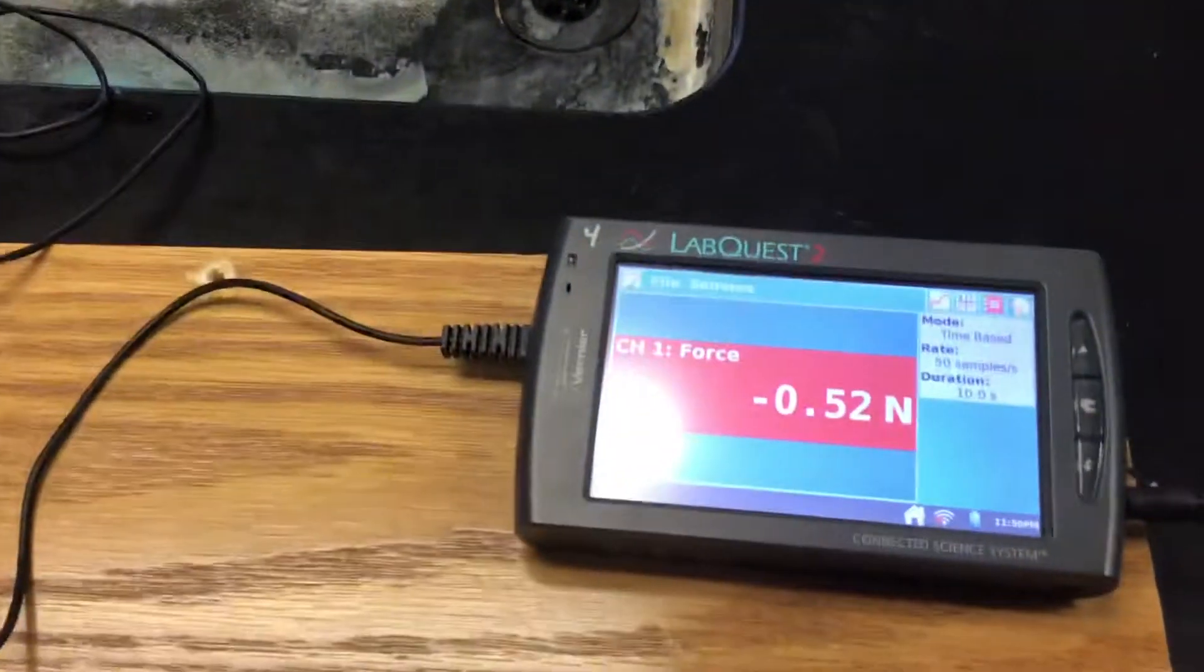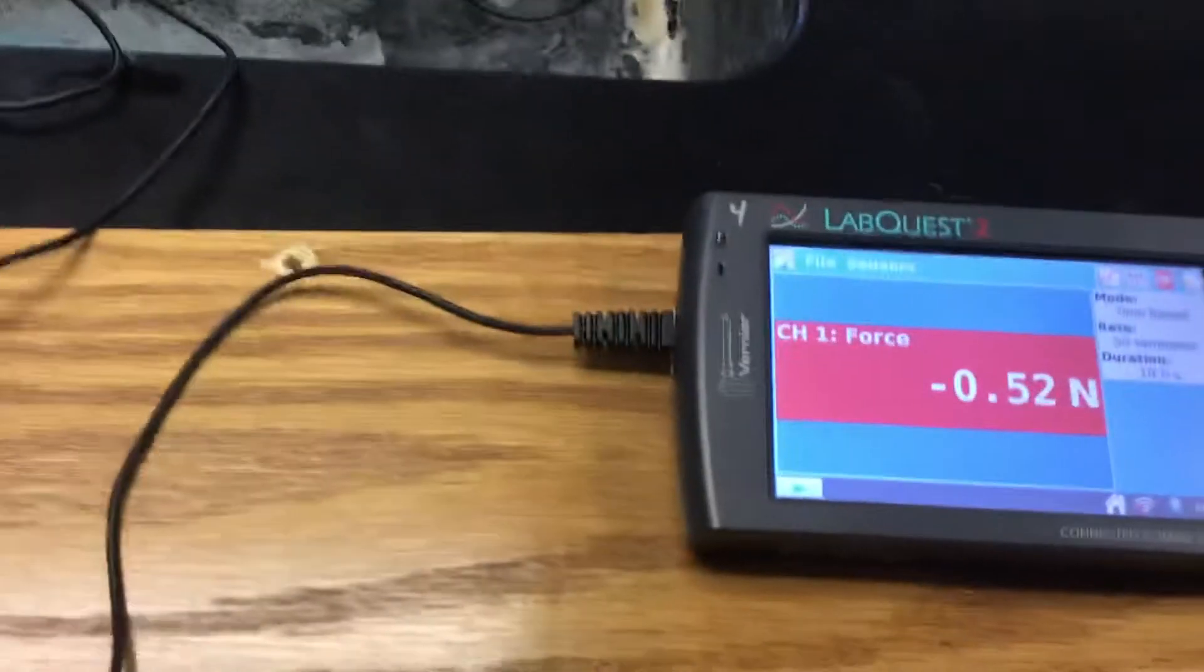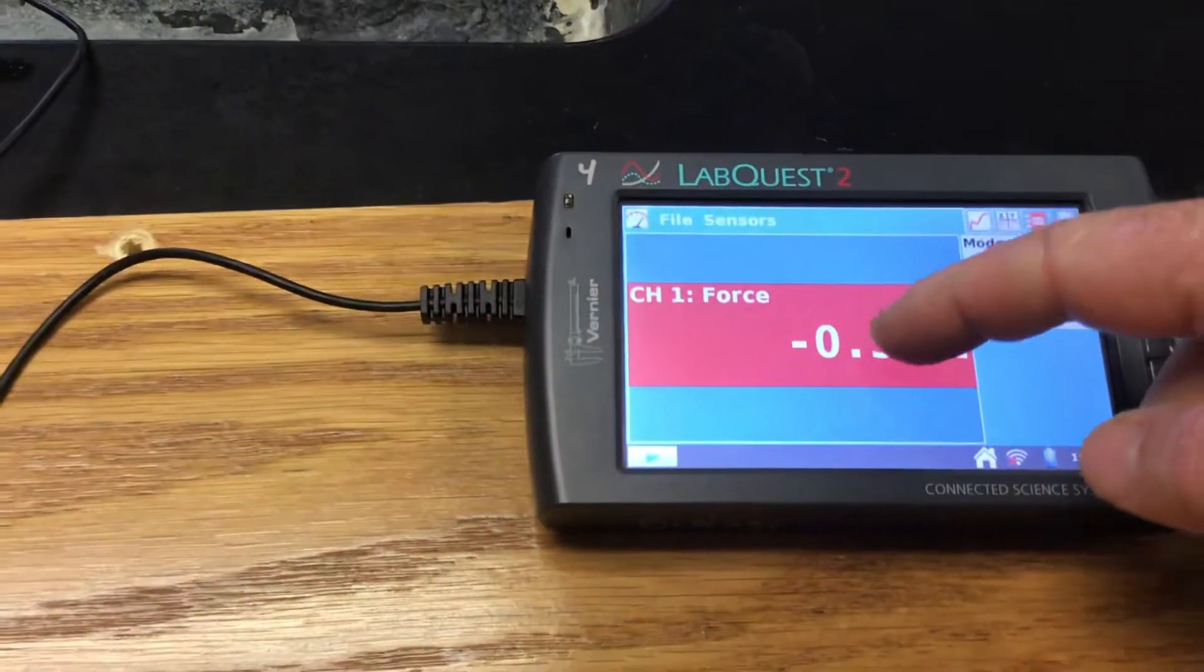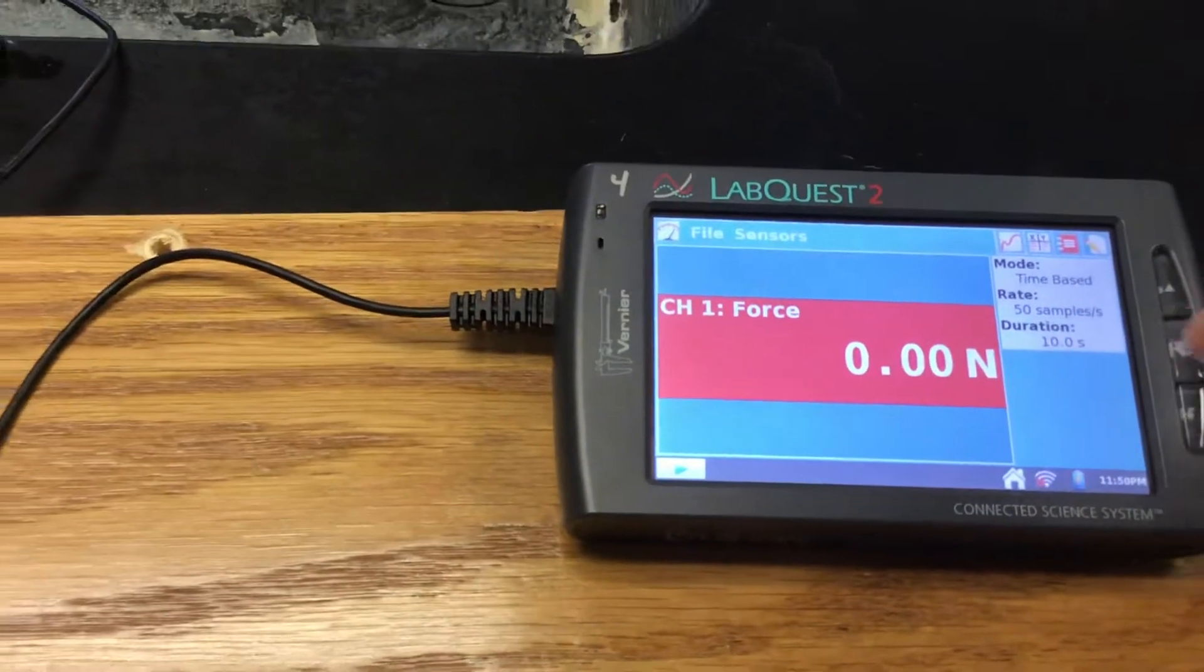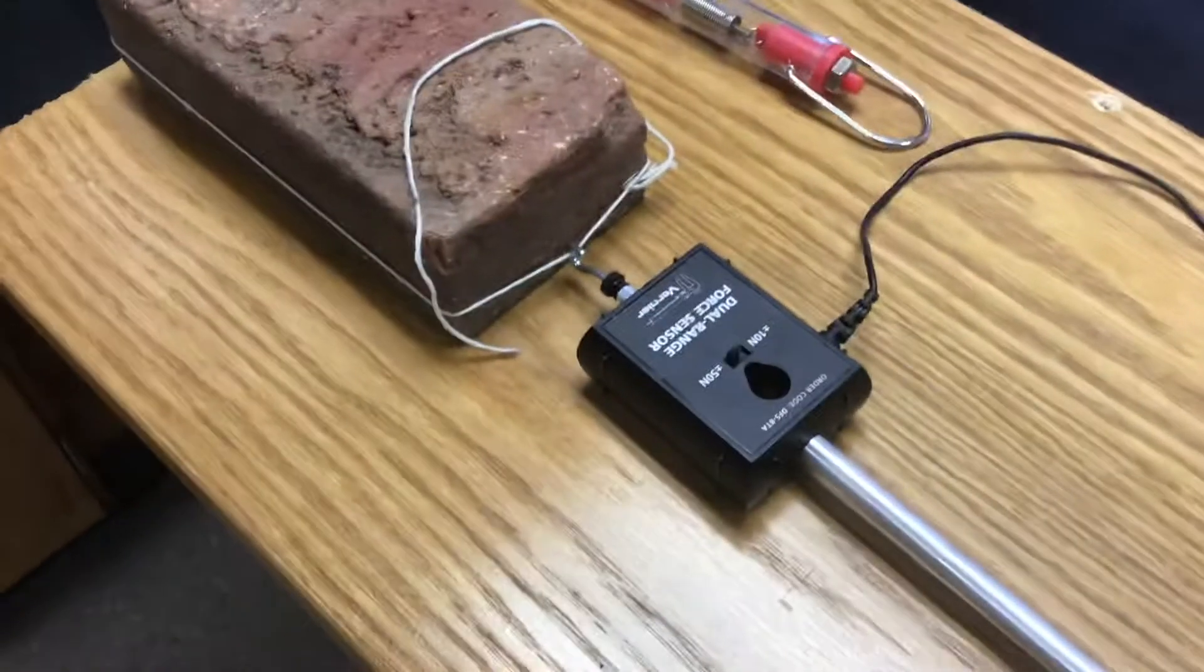If your force sensor is reading anything but zero, please zero it before you begin. Click on your screen and click zero. It should then read zero. We are now calibrated to perform our experiment.